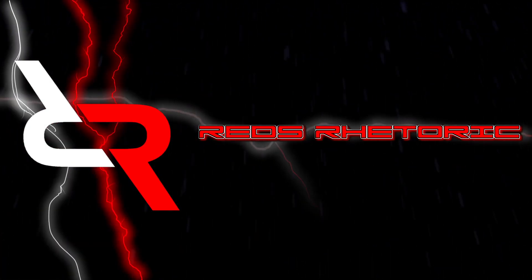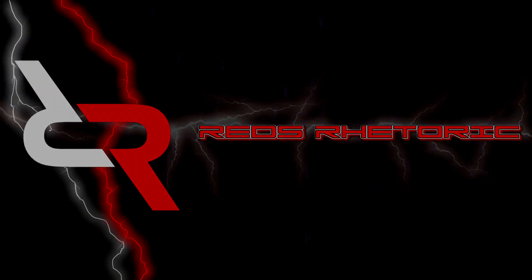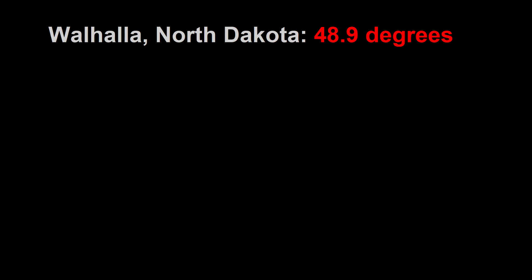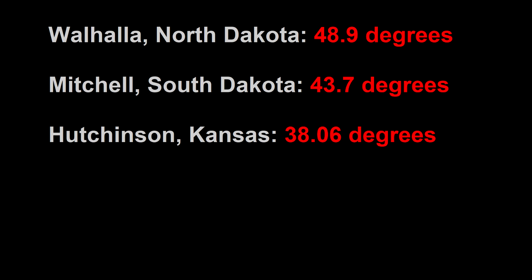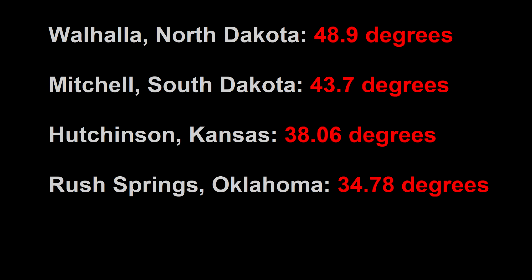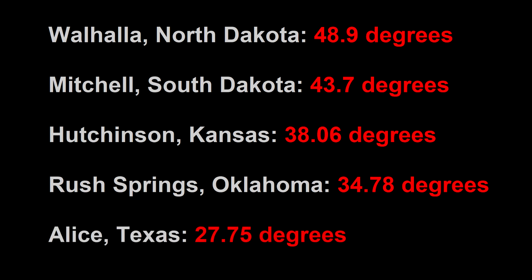Now we are ready to look at the data. Here are the EQ angles found for each location: Walhalla, North Dakota — 48.9 degrees; Mitchell, South Dakota — 43.7 degrees; Hutchinson, Kansas — 38.06 degrees; Rush Springs, Oklahoma — 34.78 degrees; and Alice, Texas — 27.75 degrees.